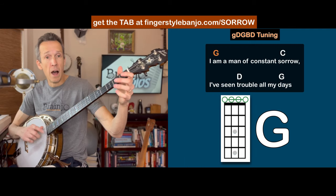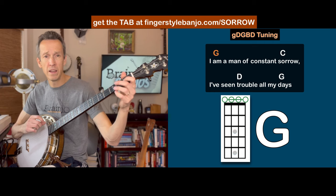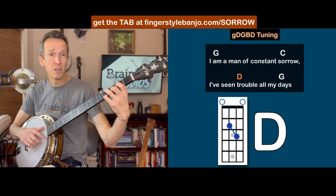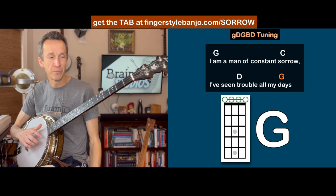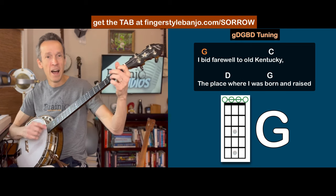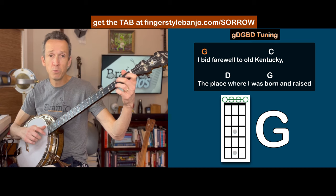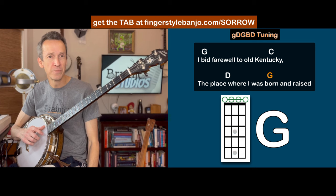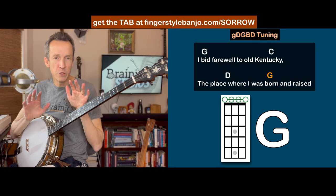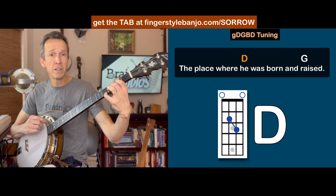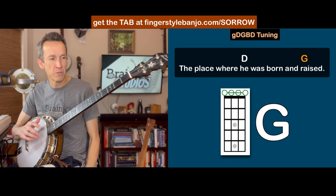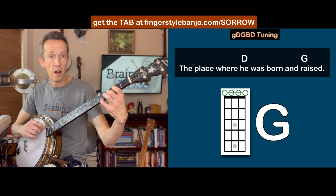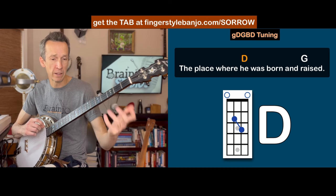It starts on the one, the G chord: 'I am a man of constant.' Move to the four, the C: 'Sorrow, I've seen.' Go to the D, the five chord: 'Trouble all my...' Back to the one: 'Days.' That's the whole chord progression for the whole song. 'I bid farewell to old Kentucky, the place where I was born and raised.' In the movie version there's a little refrain where the backup singers sing along — that wasn't in the original Stanley Brothers version. But if you want to add that, all you do is go to the D chord again, 'the place where he was born,' and then back to the one: 'Raised.'